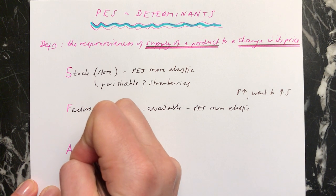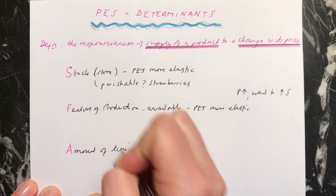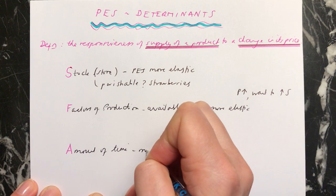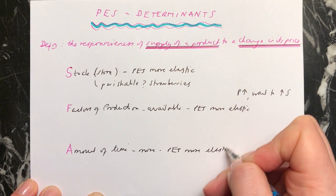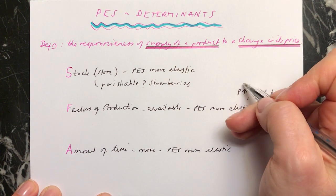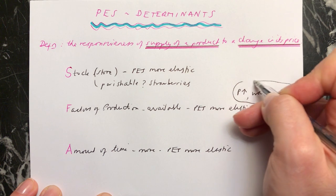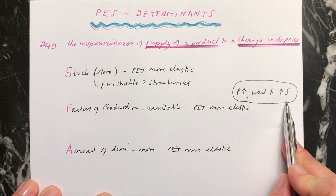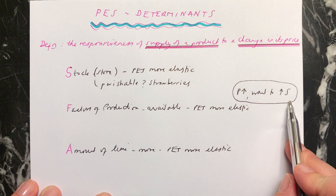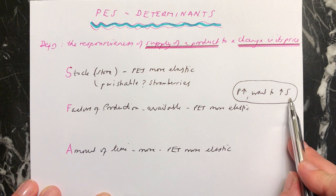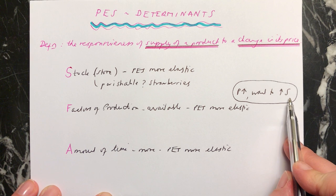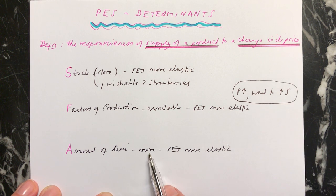A is the amount of time available to you. If you have more time available, your PES will be more elastic. For example, if the price of your product goes up and you want to supply more, in the next five seconds you won't be able to. However, in the next five years you'll be able to supply a lot more. Therefore, the more time you have, the more elastic your PES becomes.